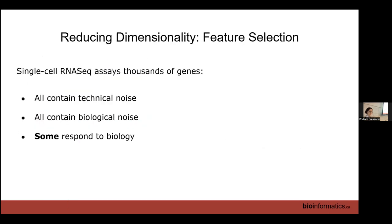So we want to get rid of this extra noise, get rid of these dimensions that aren't helping us understand our system. The first way to do that is simply feature selection. In single-cell RNA-seq, we've assayed tens of thousands of genes. All of those genes have some degree of technical noise, just random sampling. All of them also contain biological noise. Transcription isn't perfect. Only some of those genes are actually going to be differentially expressed between our cell types. So we'd like to just look at those genes that are different.